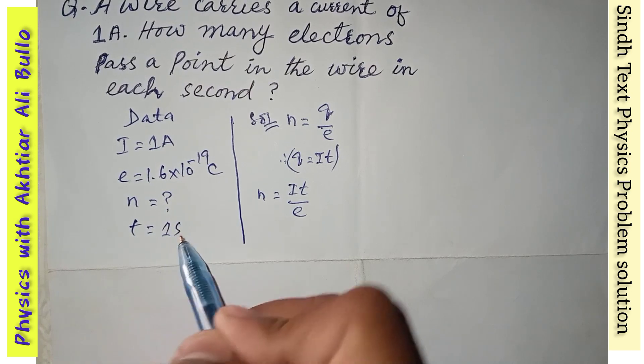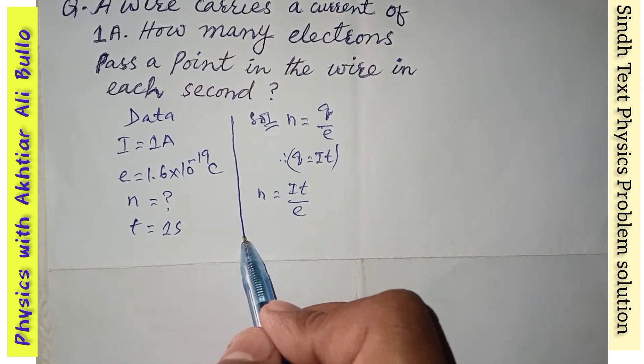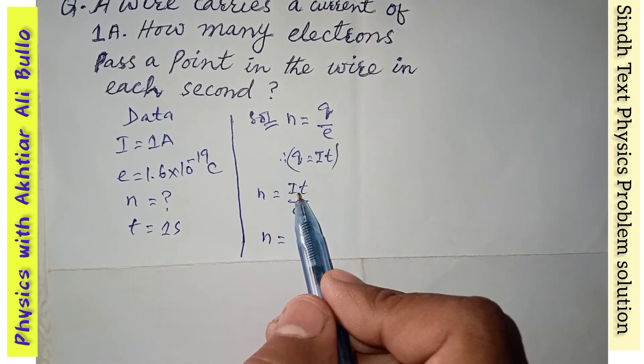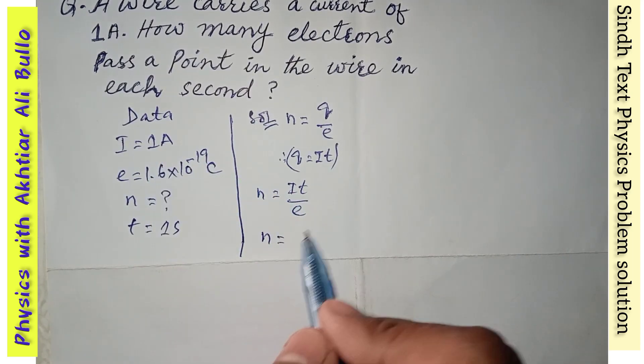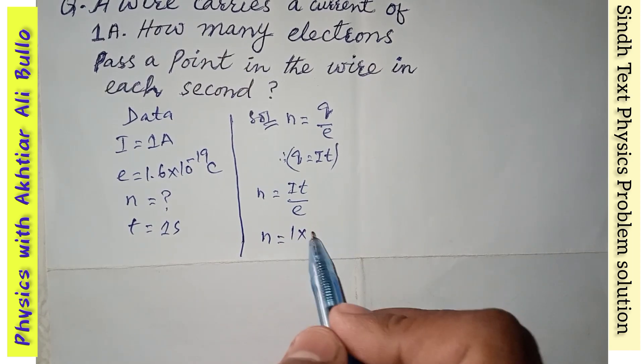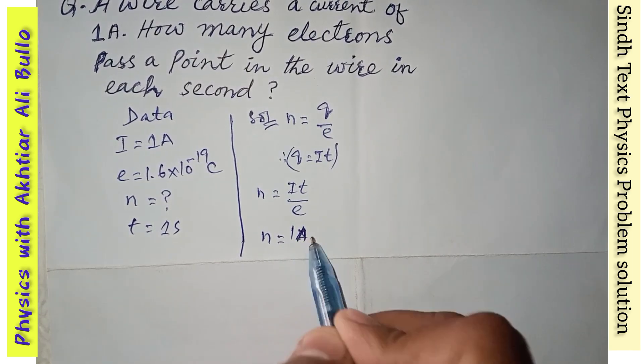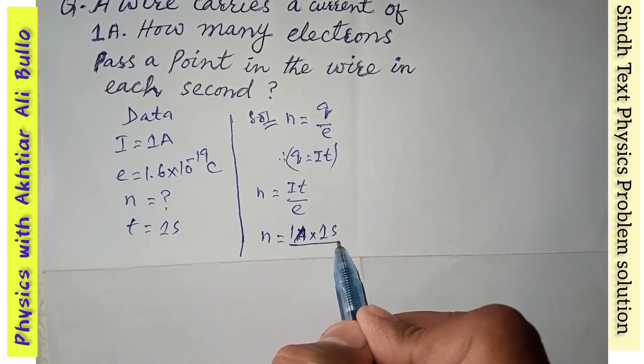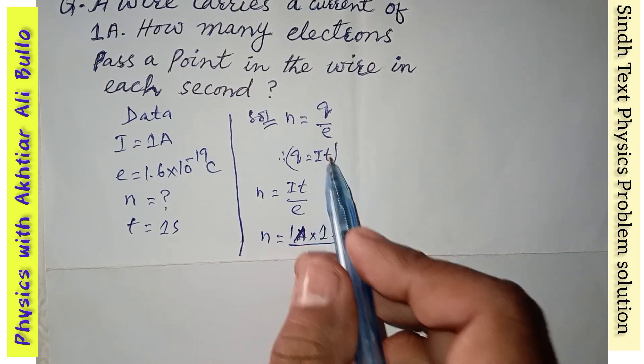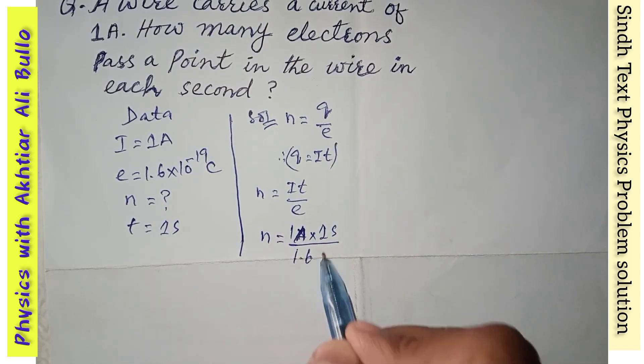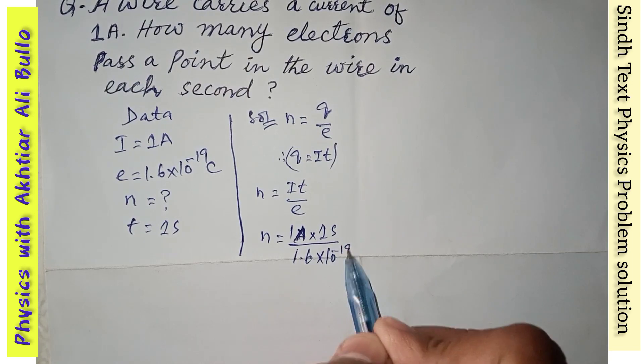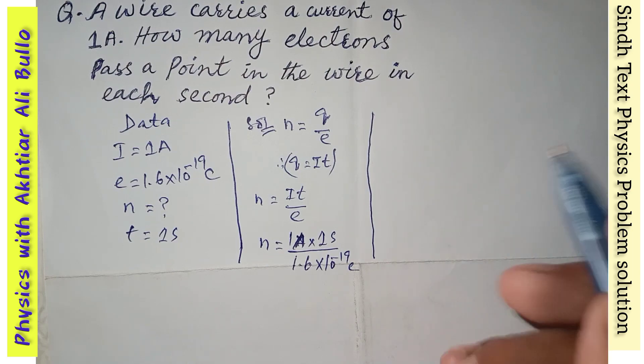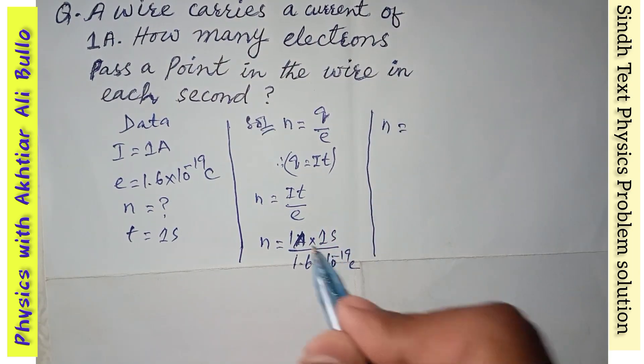time is one second, so by putting the given values, n will be equal to the value of electric current is one ampere, and the value of time is one second, divided by charge of an electron is 1.6 × 10^-19 coulomb. So the number of electrons will be 1 × 1